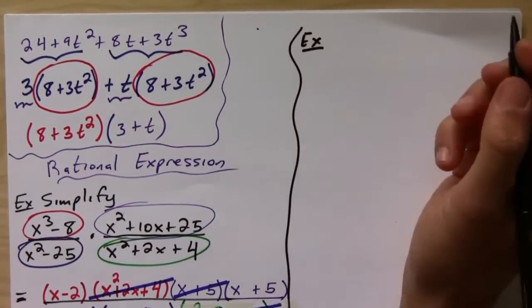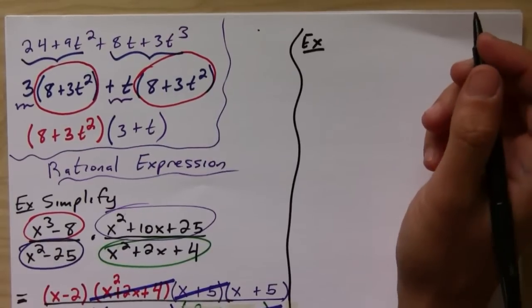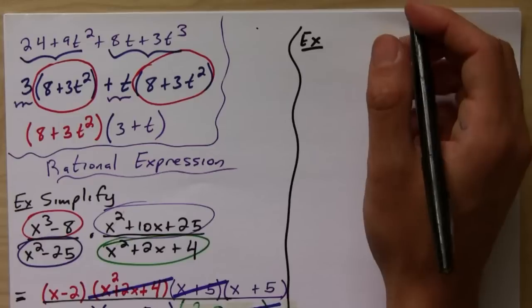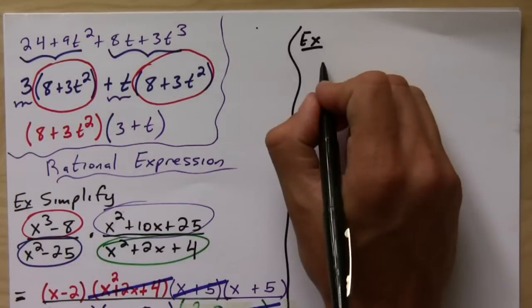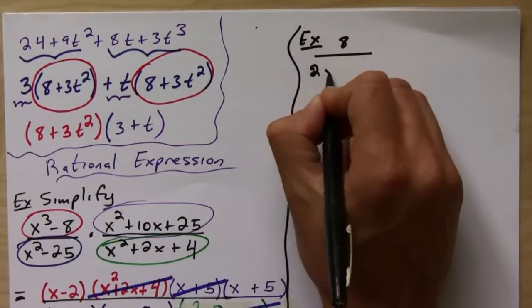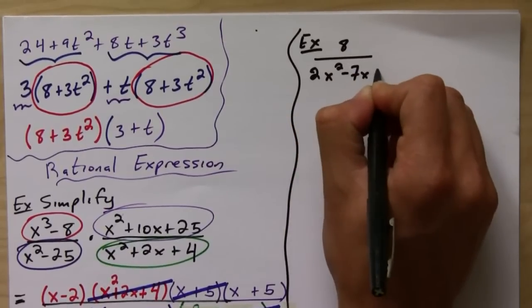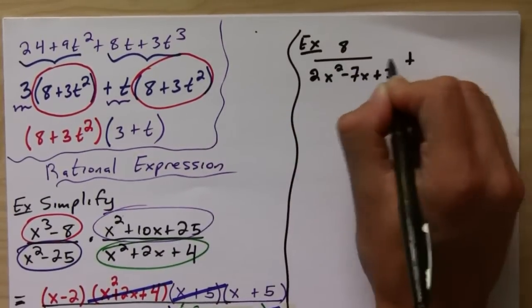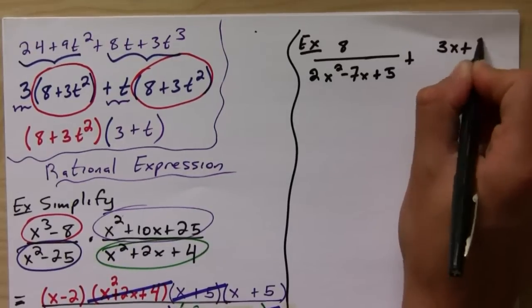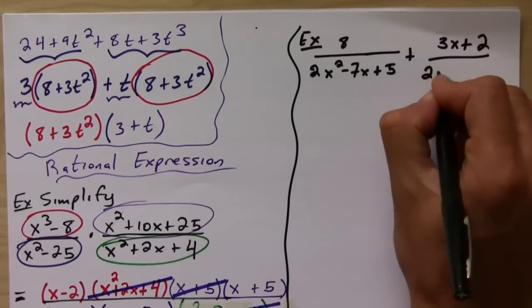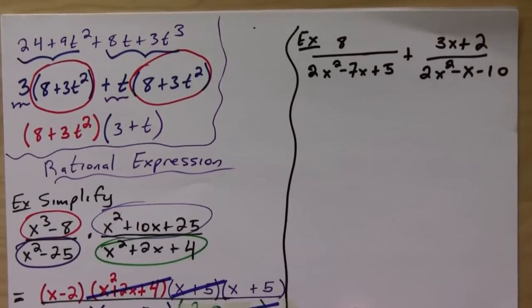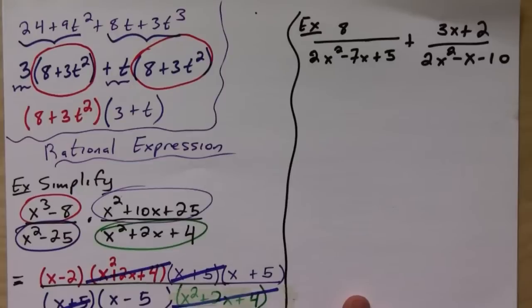But let's say you want to, for example, add something like 8 over 2x squared minus 7x plus 5, plus 3x plus 2 over 2x squared minus x minus 10.